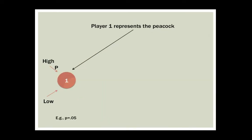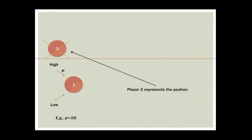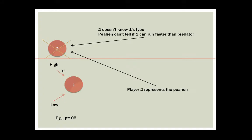Player 1 represents the peacock. This peacock could be either a high-type or fit peacock, or a low-type or unfit peacock. Player 2 represents the peahen. Player 2 doesn't know Player 1's type — the peahen can't tell if the peacock is a high-type or a low-type, or if he is physically fit.